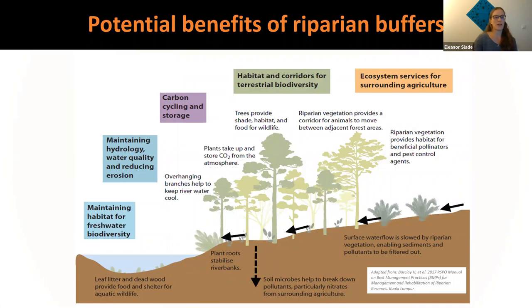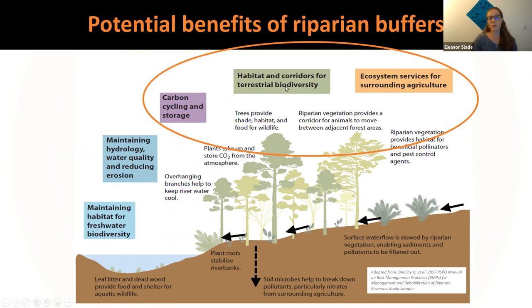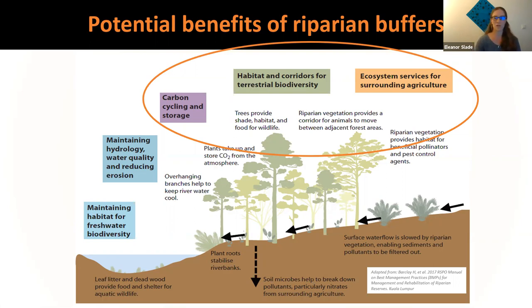When we think of the potential benefits of riparian buffers, we tend to think about maintaining hydrology, water quality, reducing erosion, or maintaining habitat for freshwater biodiversity — and this was what the Sabah Water Enactment was really built upon. But there are potentially other benefits: things like carbon storage, habitat for terrestrial biodiversity, movement and dispersal corridors across the landscape, and ecosystem services for surrounding agriculture. Conversely, oil palm managers always like to point out the potential for ecosystem disservices — so pest species spilling over from the riparian buffer area into the oil palm plantation and potentially causing damage to the crops.